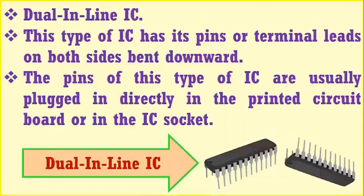The dual inline IC has pins or terminal leads on both sides bent downward. The pins of this type of IC are usually plugged in directly in the printed circuit board or in the IC socket.